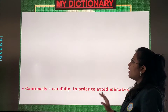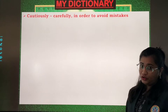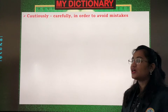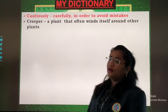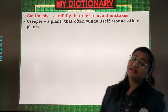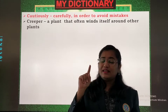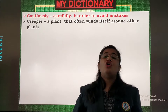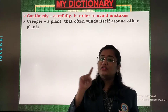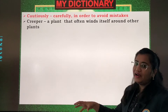Next we have cautiously. Cautiously means carefully in order to avoid mistakes — to be cautious about something. Creeper: a plant that often winds itself round other plants. Ye aise tarah ke plants hote hain jo upar ki taraf jaate hain aur unhe support ki zaroorat hoti hai, aur woh usually kisi rod ka support lete hain ya doosre plants ke aaju baaju aise round hoke unhe fold kar lete hain.